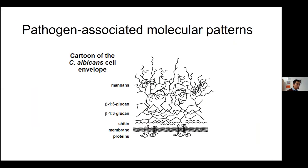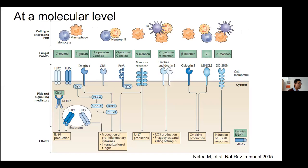From an immunology point of view, the immune system at a cellular level is not recognizing the yeast cells themselves but rather the pathogen-associated molecular patterns. This is a cartoon of the Candida albicans cell envelope, showing the membrane, transmembrane proteins, and a cell wall comprised of chitin, glucans, and mannins. These are the PAMPs that immune cells recognize — monocytes, macrophages, neutrophils, and dendritic cells — all bearing pattern recognition receptors.